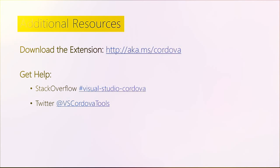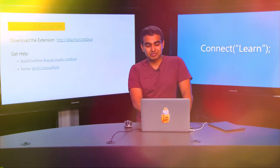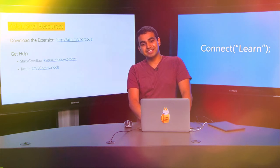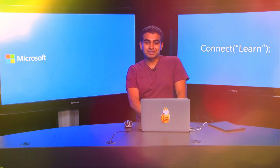That was a very quick look at how to change your Cordova version. If you want to try this out for yourself, go to aka.ms/Cordova to download our tools. If you have any questions, post on Stack Overflow using the tag Visual Studio Cordova, or tweet to us at VSCordovaTools. We'd love to hear from you, and I'll talk to you guys later.